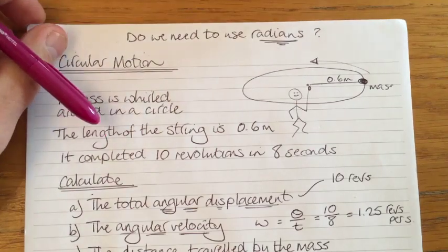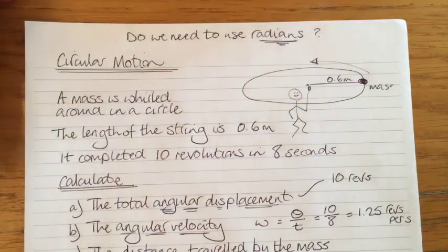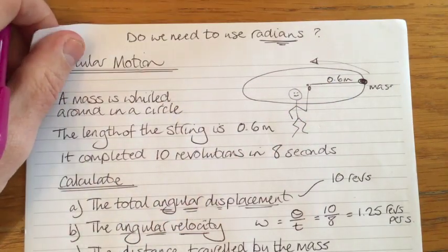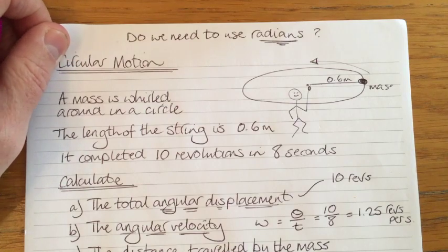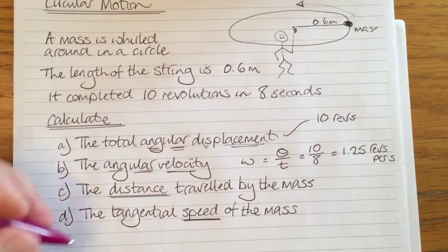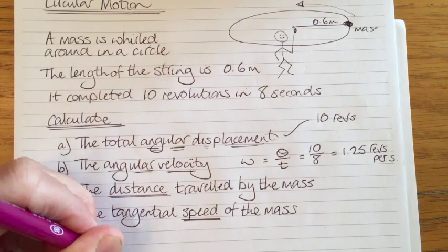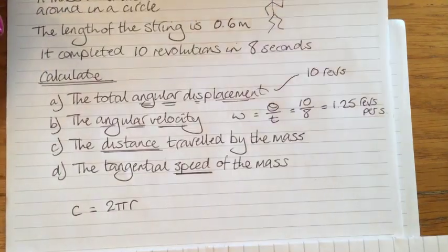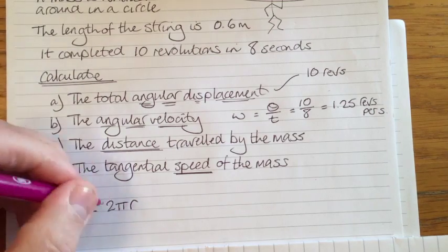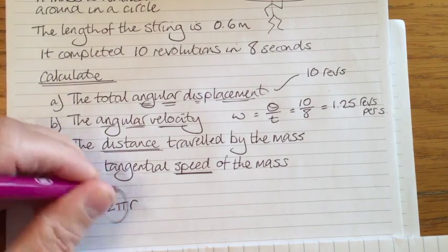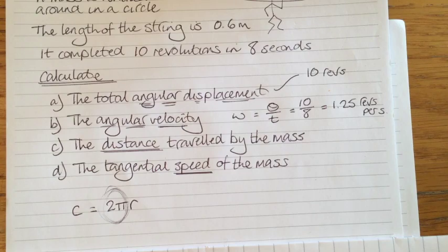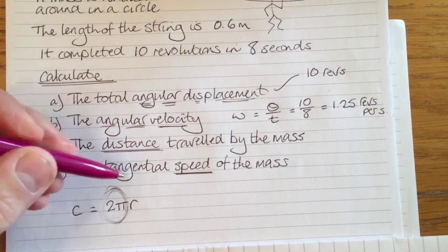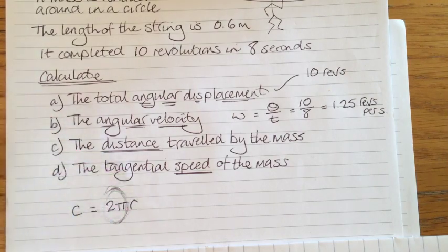What about the distance travelled by this mass in the circle? Well, if it travels 10 revolutions, then we have to work out the circumference of the circle. Circumference of a circle is 2 times pi times the radius. If you don't know that, it's time to go back to National 5 Maths. There we have the crux of the matter: whenever you work out the circumference of a circle, you introduce a factor of 2 pi.